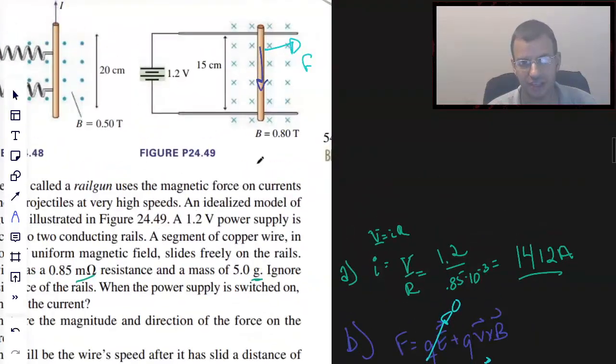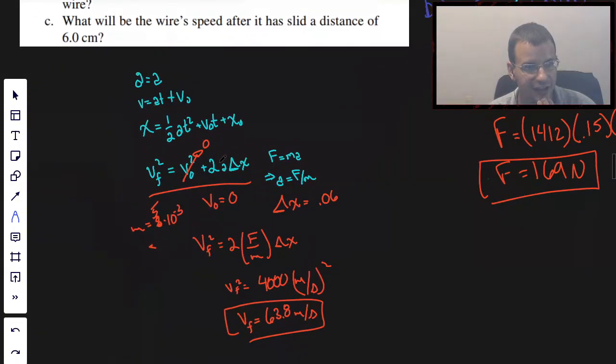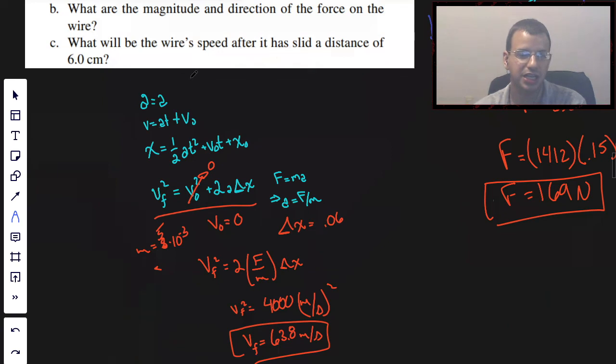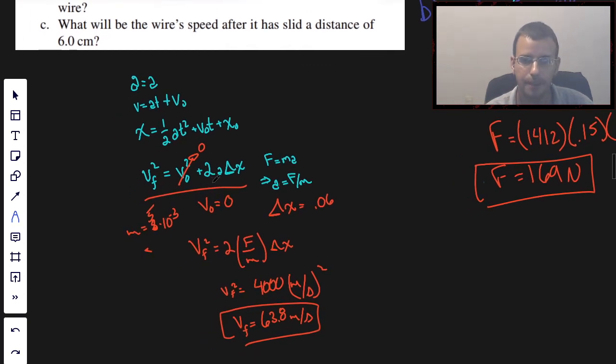We do want to check the cross product of L cross B though, to make sure that it's shooting outwards and not shooting inwards. Because if the current was going the opposite direction, it would actually pull the bar in, which is not what we want. Terrible gun design. And then finally, they asked us, what's going to be the speed of this wire after it slid a distance of six centimeters? And for that, we just used kinematic equations and the force we got from the previous answer to find how fast it was moving. So, hope that helped. See you in the next problem.